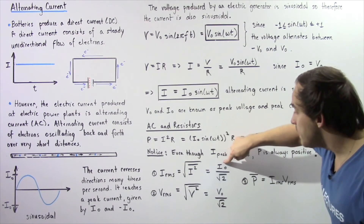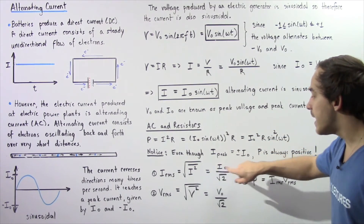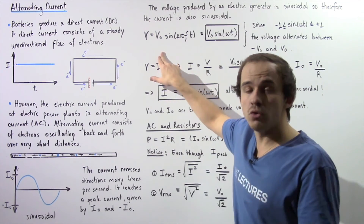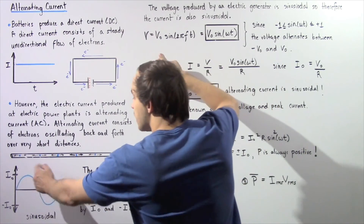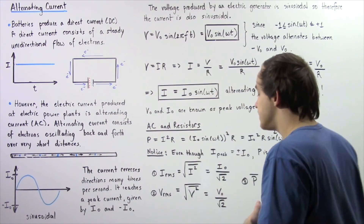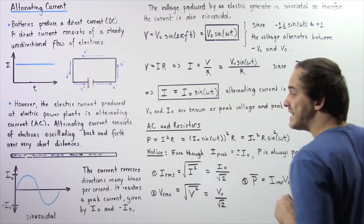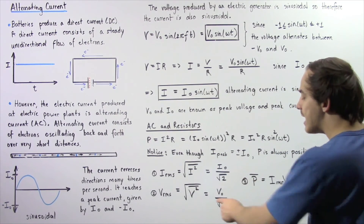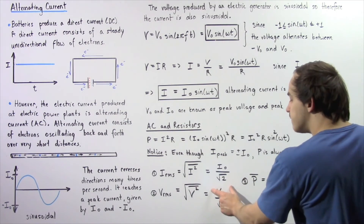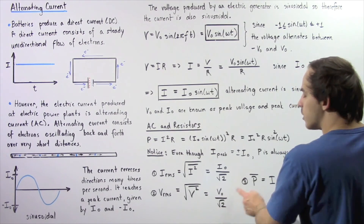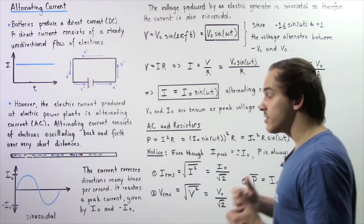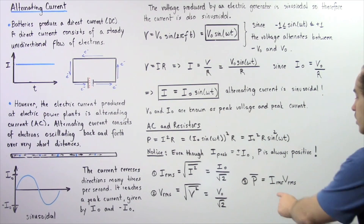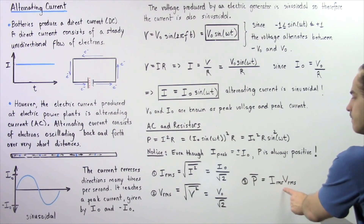The root mean square current, I_rms, equals the square root of the average of the squares, which equals the peak current I₀ divided by the square root of 2. Likewise, since voltage also varies just like current, the root mean square voltage V_rms equals V₀ divided by the square root of 2. To calculate the average power, the average power equals the product of I_rms and V_rms.